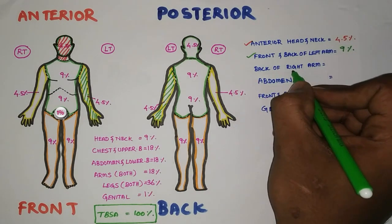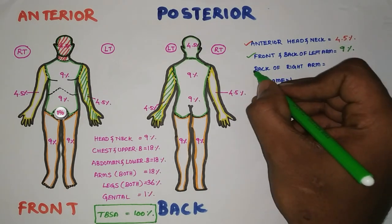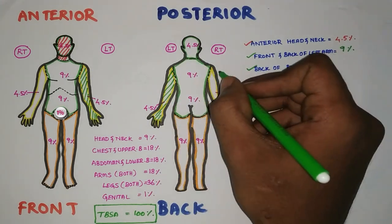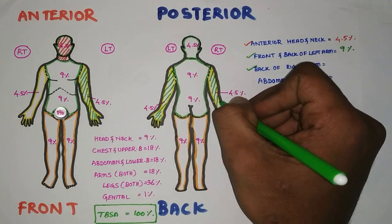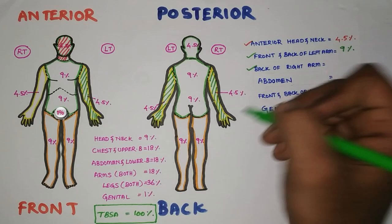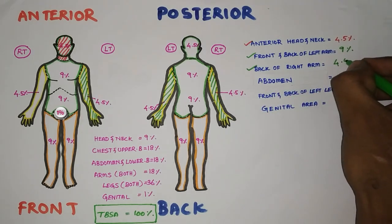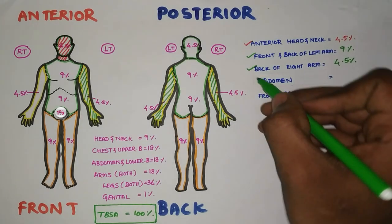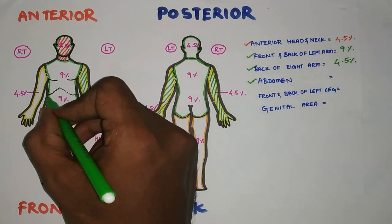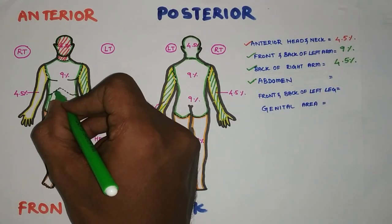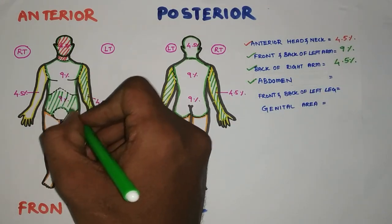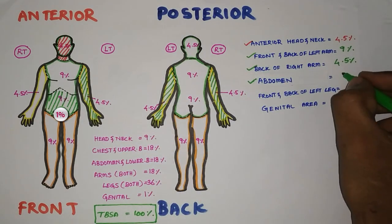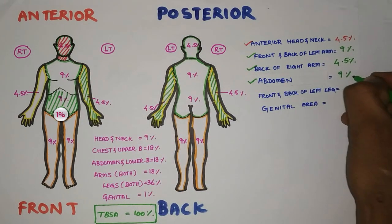Next, the back of the right arm — that is the posterior right arm — so 4.5%. Then they said about the abdomen, so only the front area is considered. They did not say about the back side, so it is only 9%.